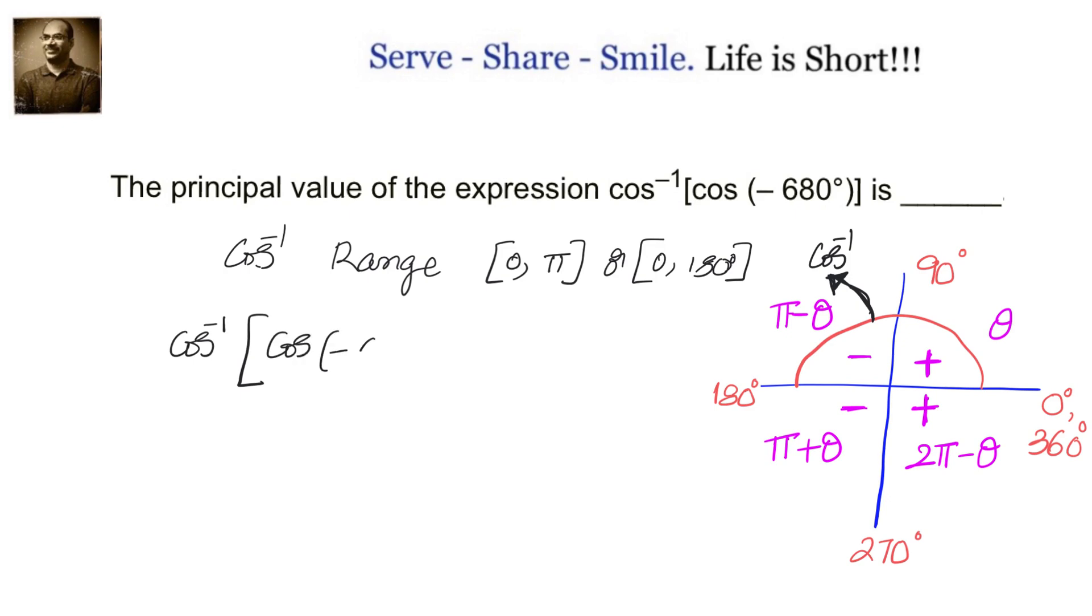If the value is negative, we will go to second quadrant. If the value is positive, we will take it to the first quadrant. First quadrant is theta, second quadrant is pi minus theta.